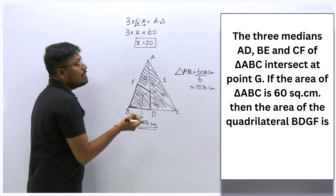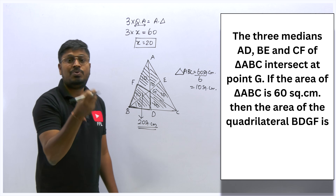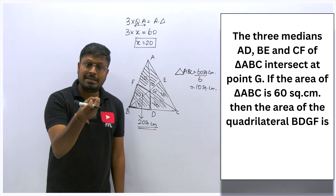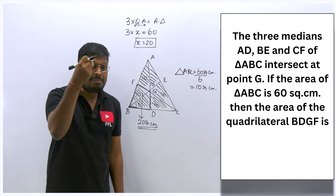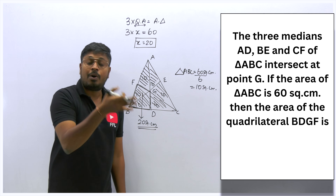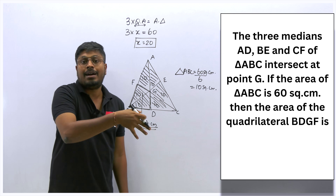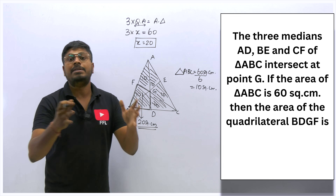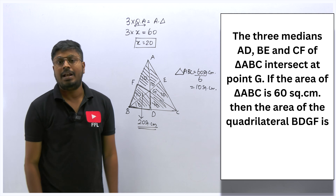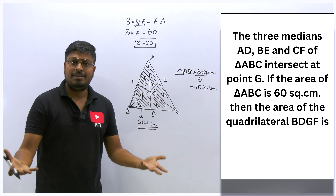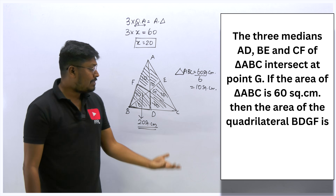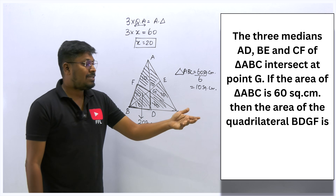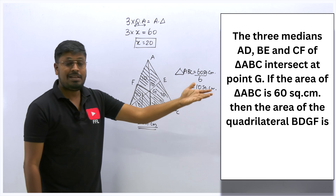So that is how we solve the question both by property and by the basic concept of the median — understanding what the median does to the triangle, how it creates quadrilaterals, and how the area is split into equal halves. Easy, right? Let's solve another question to understand this concept even more.